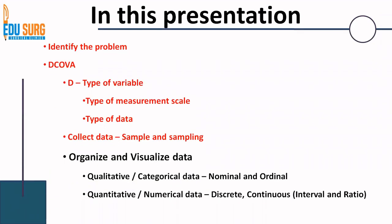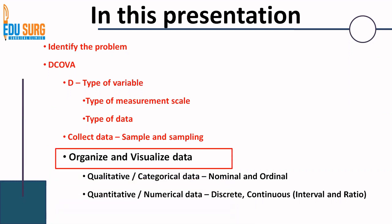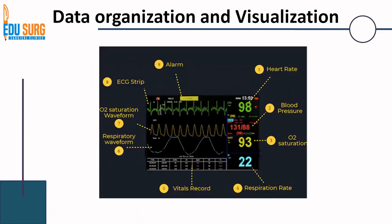We have already seen the DCOVA framework — the types of variable measurement scales and types of data. We have seen sample and sampling in the previous parts of this series, and today we are going to see the organization and visualization of categorical data. In the next part of this video we will see the organization and visualization of numerical data. If you feel this topic is not important, consider an ICU monitor where a lot of data has been organized and presented in a way that you can understand your patient's clinical status in just a glance at the monitor. This is basically the essence of data organization and visualization — to make the data appealing to the readers and to help them understand the data in the most simplified manner.